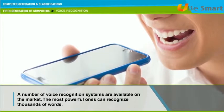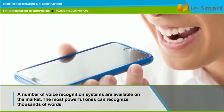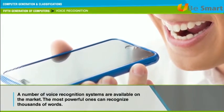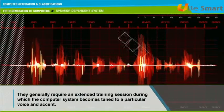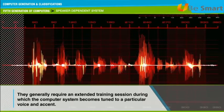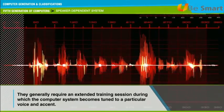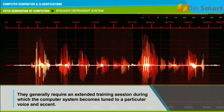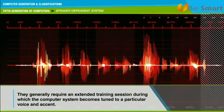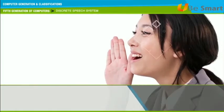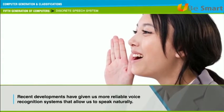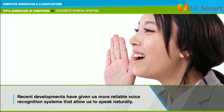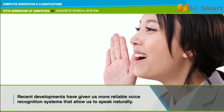A number of voice recognition systems are available on the market, and the most powerful ones can recognize thousands of words. Speaker dependent systems generally require an extended training session during which the computer system becomes tuned to a particular voice and accent. Discrete speech systems require the speaker to speak distinctly and slowly, separating each word with a short pause.